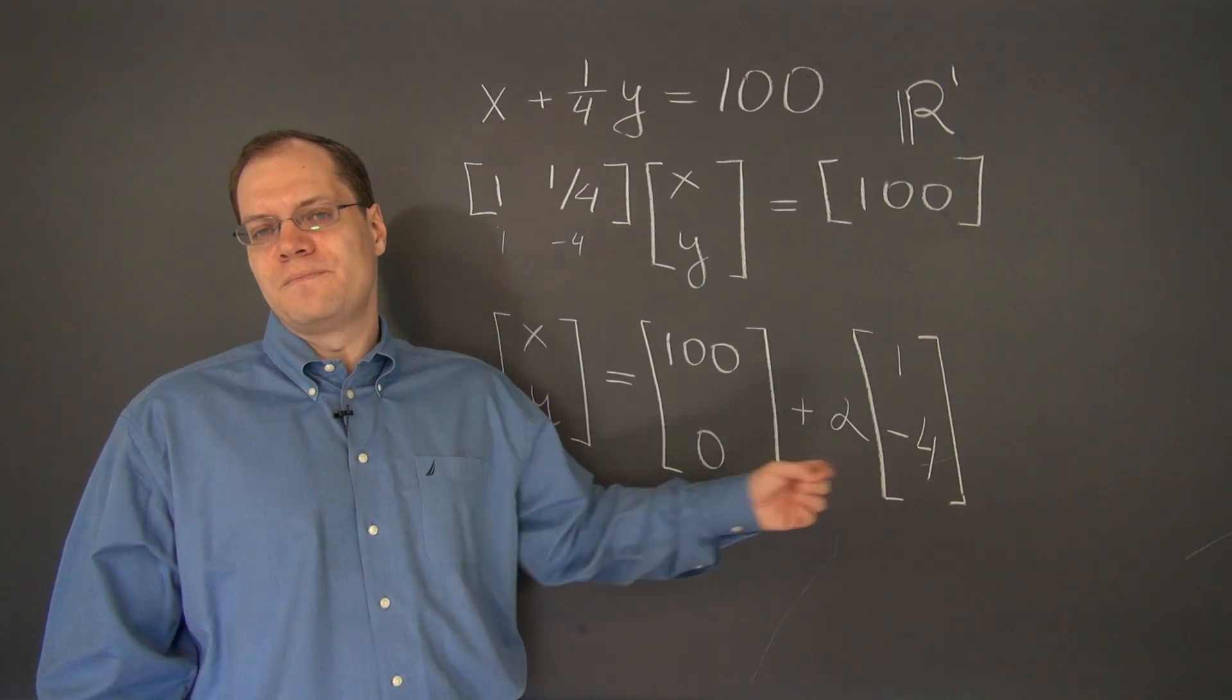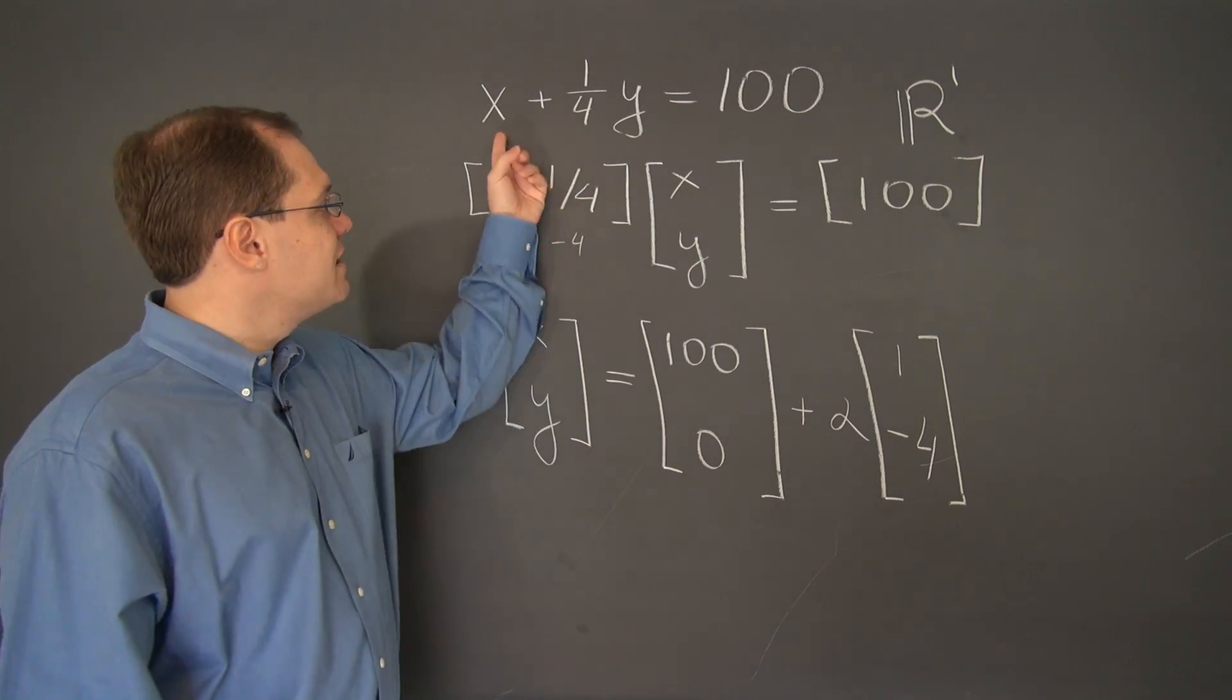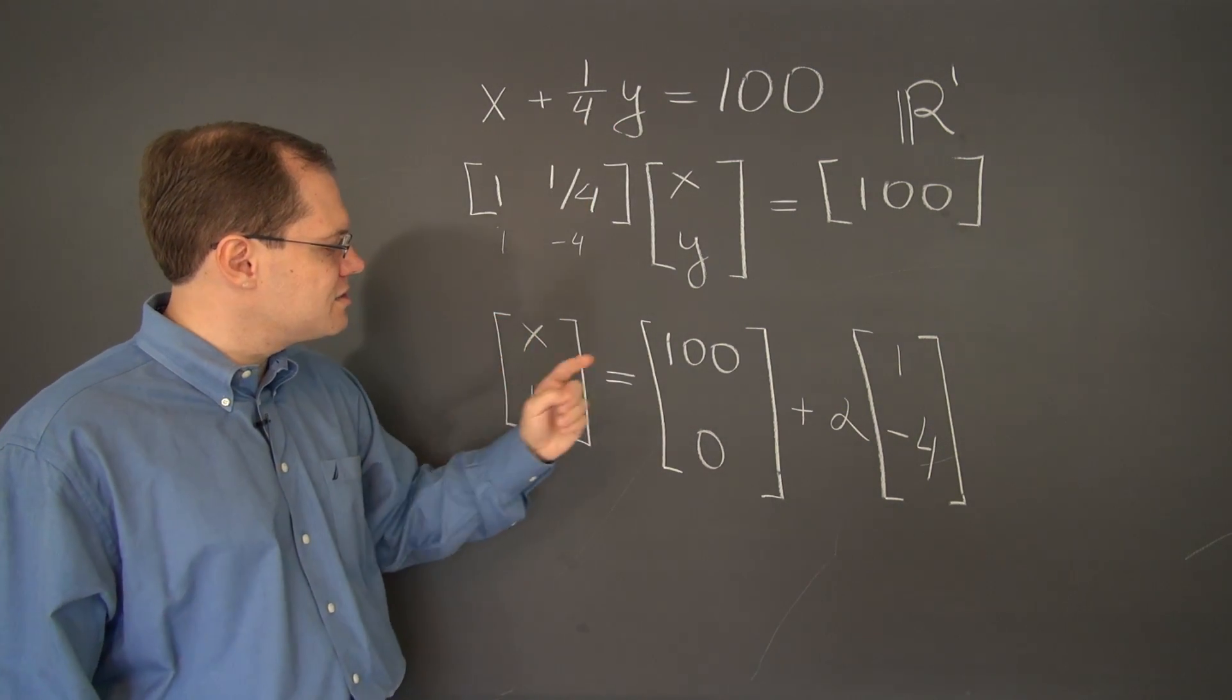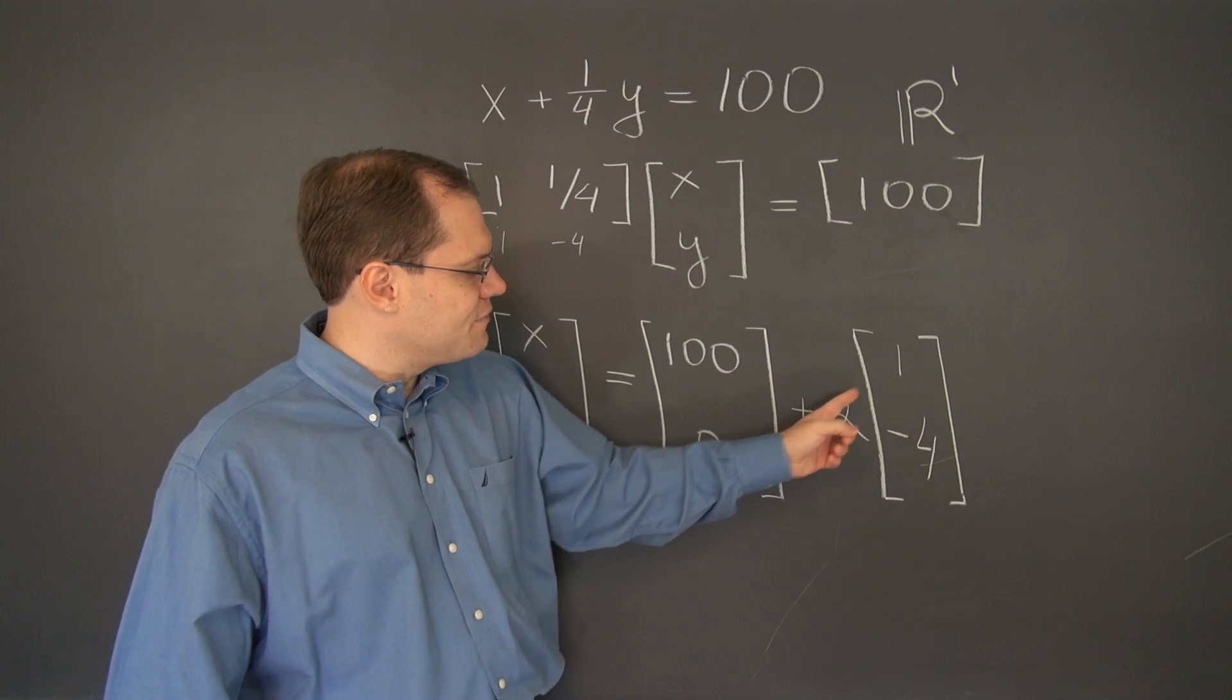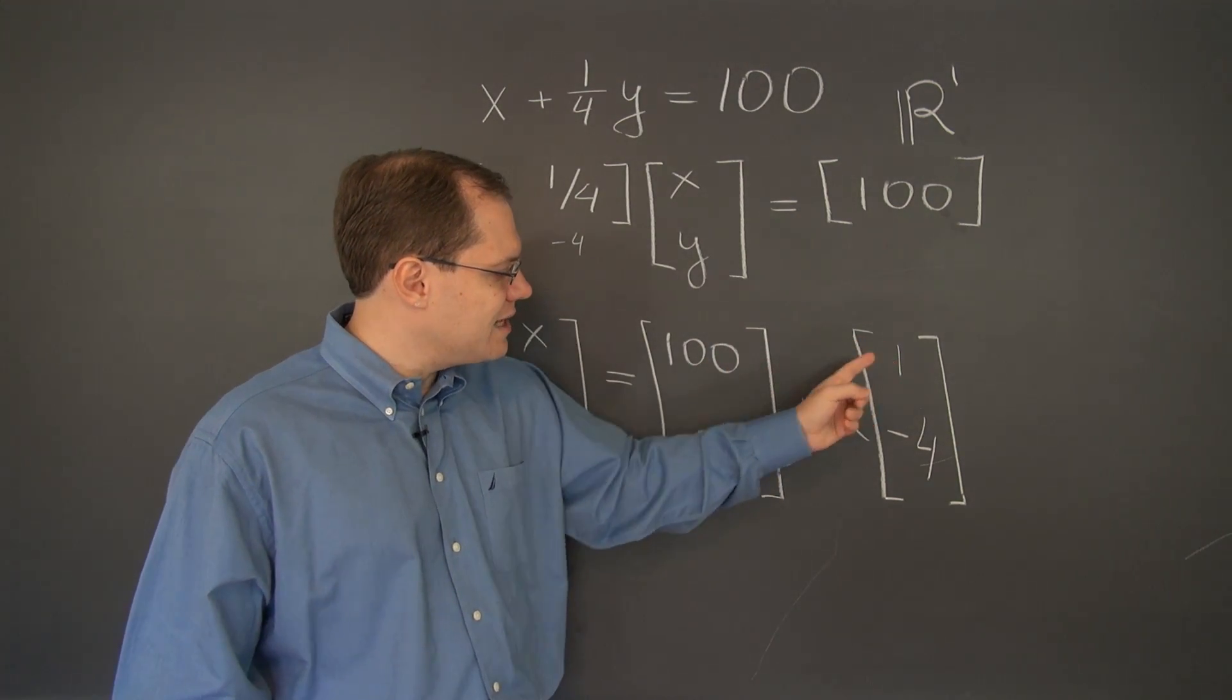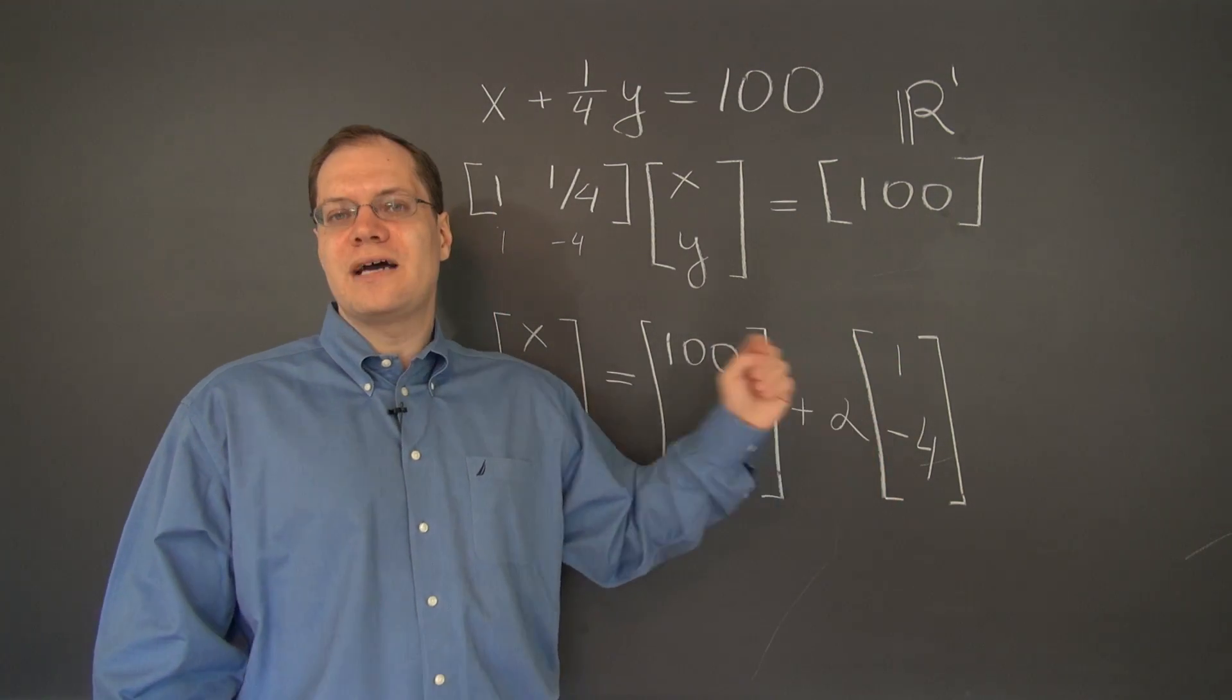To get 99, 4, which was the second solution, we have to take α equals minus 1. Then we have 99, 4. That works also.